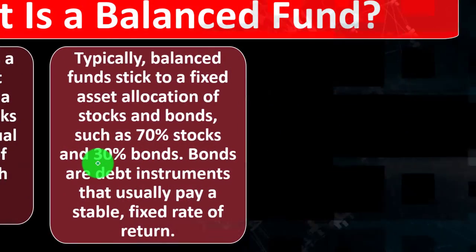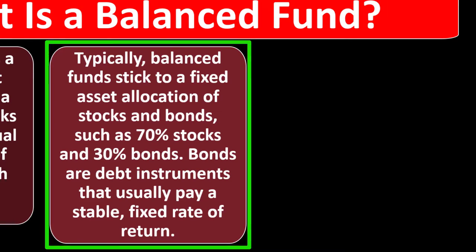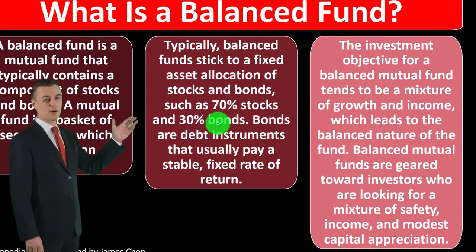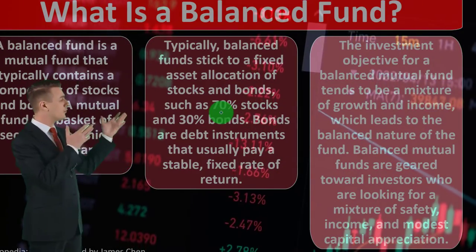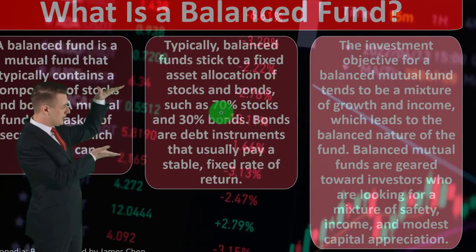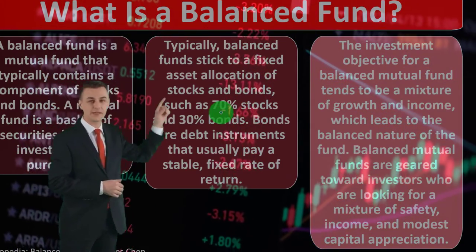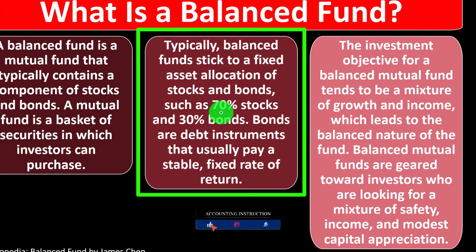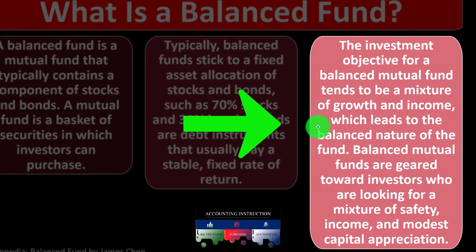Bonds are debt instruments that usually pay a stable, fixed rate of return — the fixed income side of things. Not as exciting, not as much movement, but usually more dependable and reliable. The investment objective for a balanced mutual fund tends to be a mixture of growth and income. On the stock side, there are many categories: growth funds, index funds, market cap funds, U.S. versus foreign stocks, sectors, and so on — still a wide area of investment. This leads to the balanced nature of the fund.